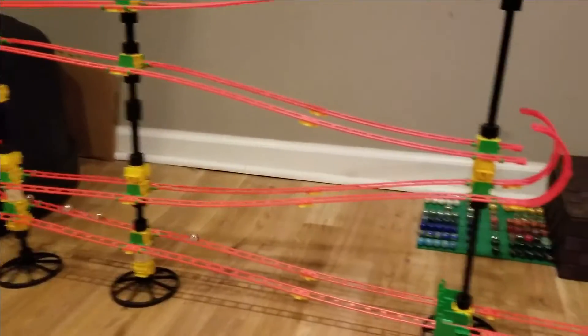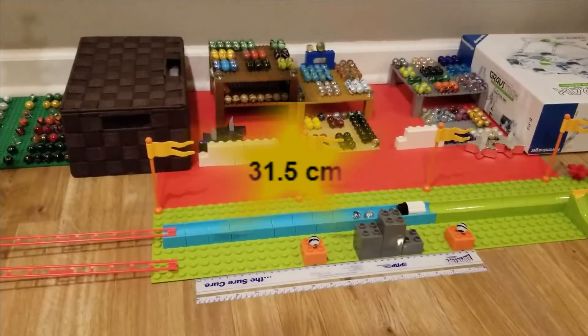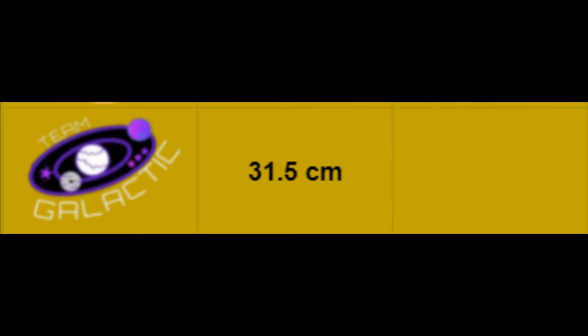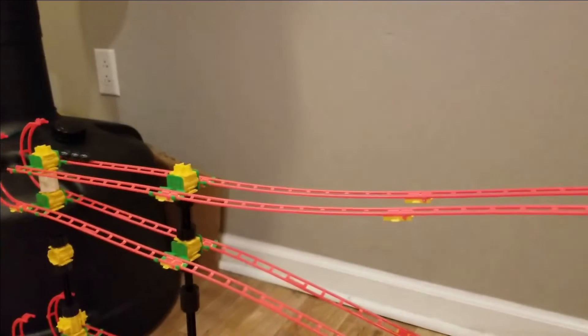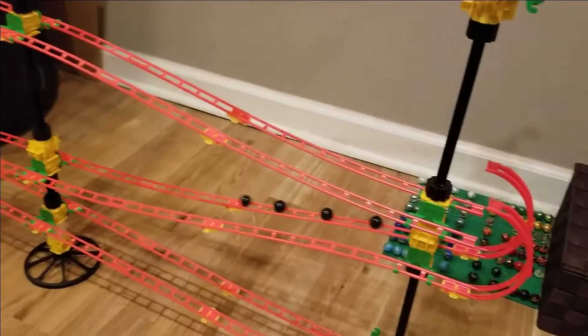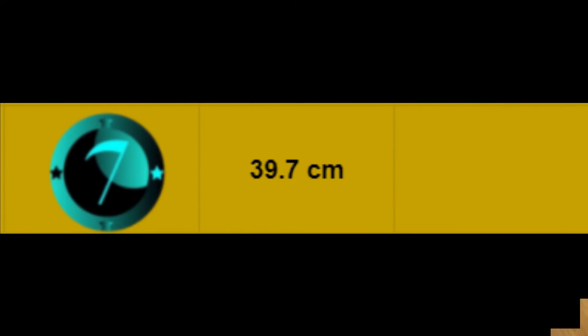Team Galactic up now. They've stuffed the reserve Stylus in. And how will it pay off? 31.5. Not a good result for Team Galactic. Up now, the Moonlight Titans, and they're going for a bunch formation! Will it work? Oh, that's going to be a good push! 39.7! The Moonlight Titans vault up into second place!